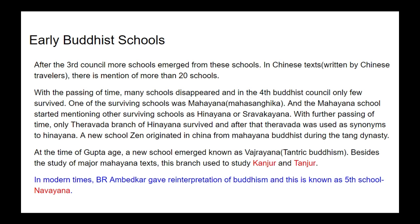A new school, Zen, originated in China from Mahayana Buddhism during the Tang dynasty. In India, during the Gupta age, a new school emerged from Mahayana Buddhism known as Vajrayana or Tantric Buddhism. Vajrayana followers studied Kanjur and Tanjur texts in addition to major Mahayana texts. In modern times, B.R. Ambedkar gave a reinterpretation of Buddhism known as the fifth school: Navayana. So in modern times there are five different schools: Hinayana, Mahayana, Zen, Vajrayana, and Navayana.